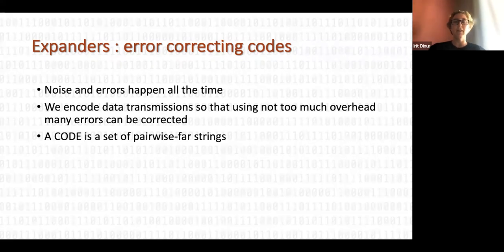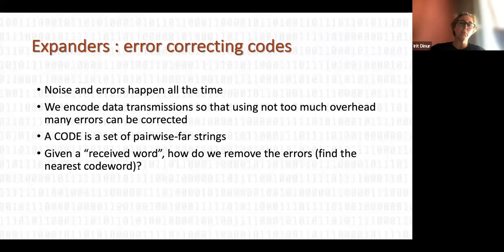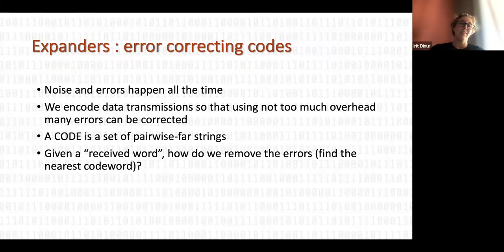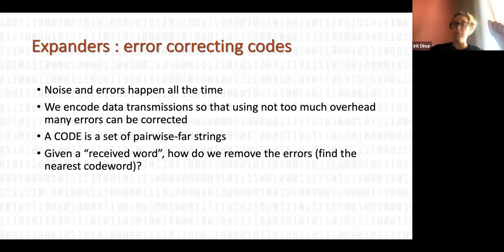A linear error correcting code is a linear subspace where the elements are strings that are pairwise far apart in Hamming distance. This allows us to ensure that if only a few errors occurred, the received string is close to exactly one valid codeword. The algorithmic question is: given a received word, how do you find the nearest codeword? A priori, there could be an exponentially large search space.